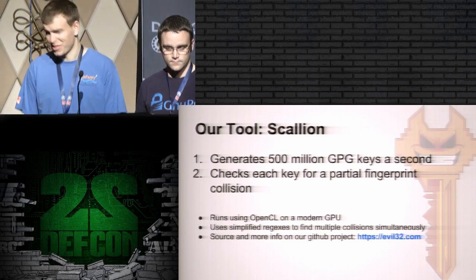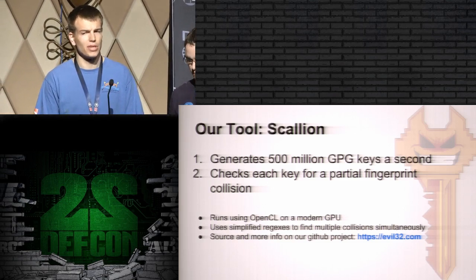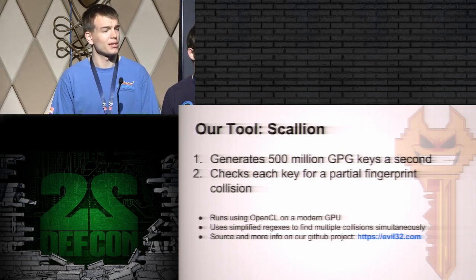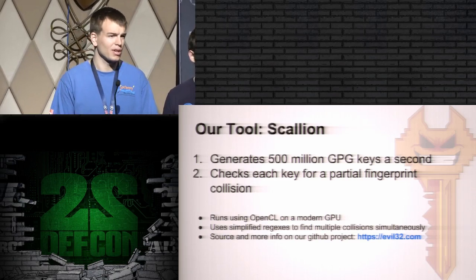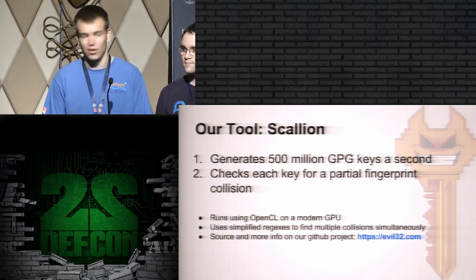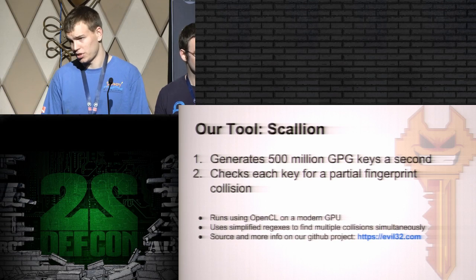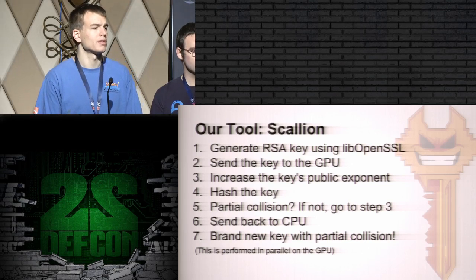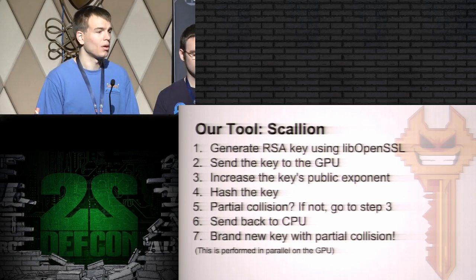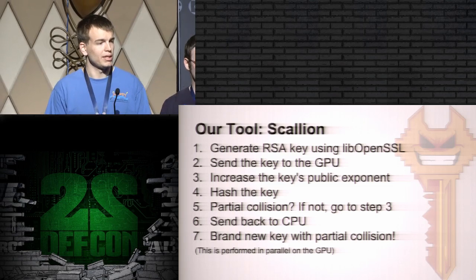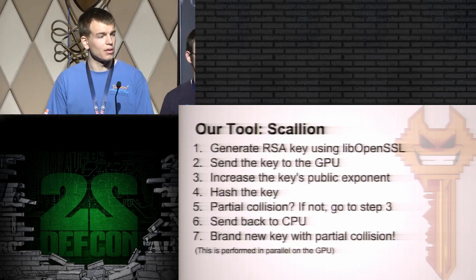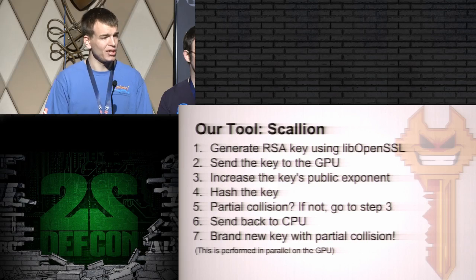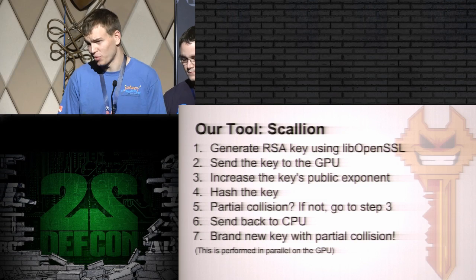For finding these fingerprint collisions, we wrote a tool called Scallion. At a very high level, Scallion generates 500 million GPG keys per second on the GPU, and for each key it checks for partial fingerprint collisions. Scallion runs on any modern GPU — old Bitcoin hardware is prime — on OpenCL. You can grab the source at evil32.com. Essentially, the first step is generating an RSA key on the CPU, sending it to the GPU, incrementing the public key's exponent, and hashing the key — steps three and four done 500 million times per second. If there's a partial collision, it sends it back to the CPU, and you have a brand new GPG key with a partial fingerprint collision.